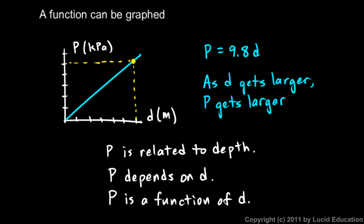Pressure depends on depth. The value we get for P depends on the value we put in for d. Or you could say it like this, and this is the way a mathematician would say it: P is a function of d. And what I want you to understand is that saying 'P depends on d' and saying 'P is a function of d' mean exactly the same thing. This is how a mathematician would say it.